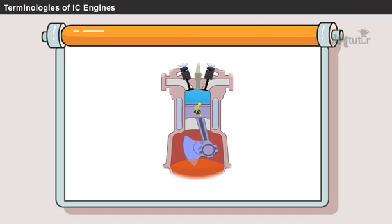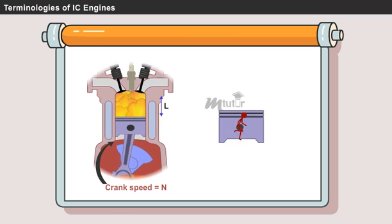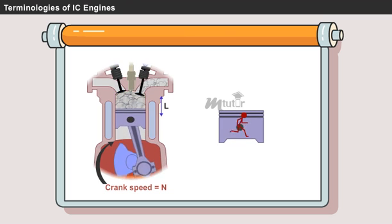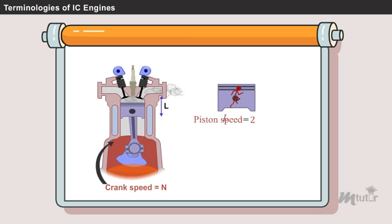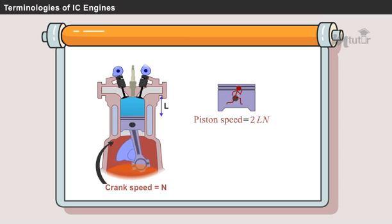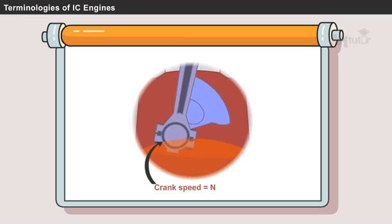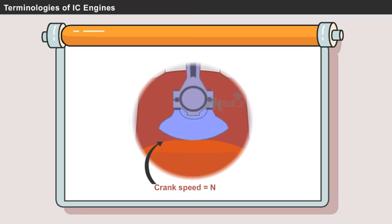The rate at which the piston moves inside the cylinder is known as piston speed. This rate is not constant. Piston speed is equal to 2 into length of the stroke and speed of the engine. That is 2 into L into N. Engine speed is nothing but the crankshaft speed.